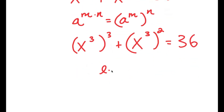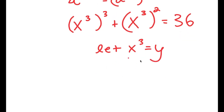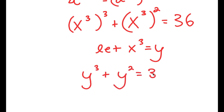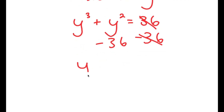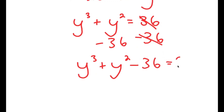Now I'm going to let x to the power of 3 equal to the variable y. So if I substitute in y for x to the power of 3, I get y to the power of 3 plus y squared is equal to 36. And if I subtract 36 on both sides, I get y to the power of 3 plus y squared minus 36 is equal to 0.